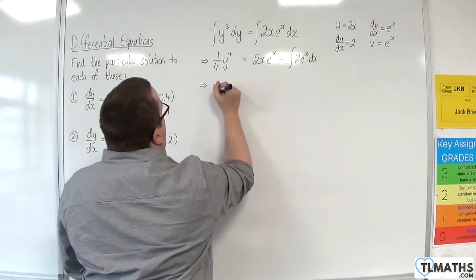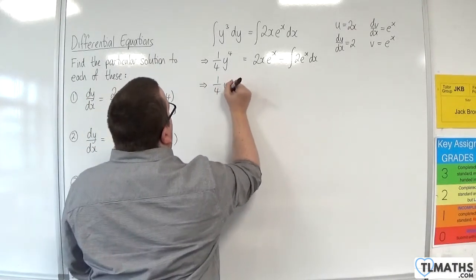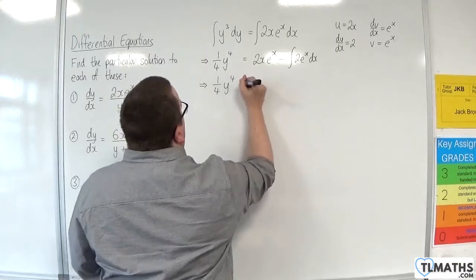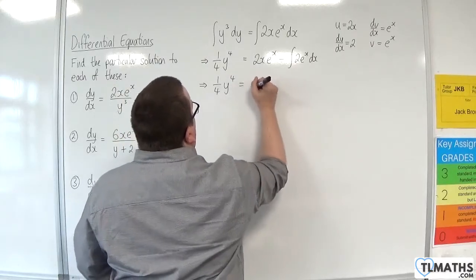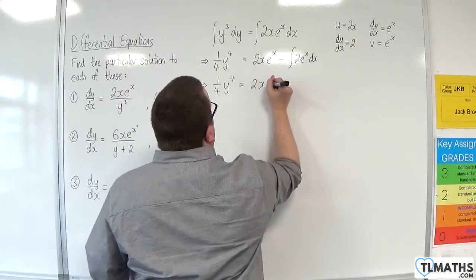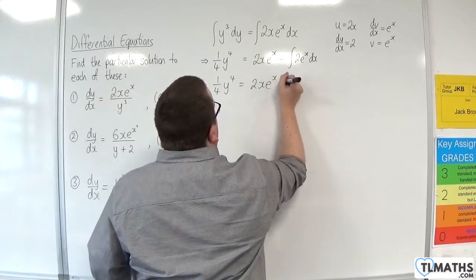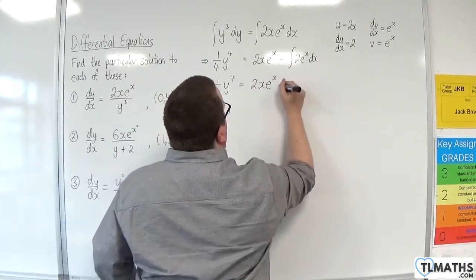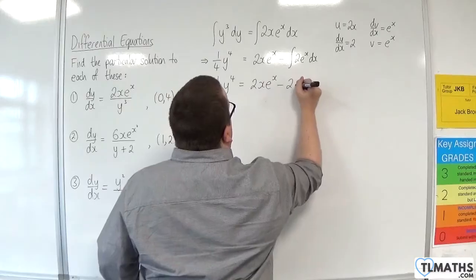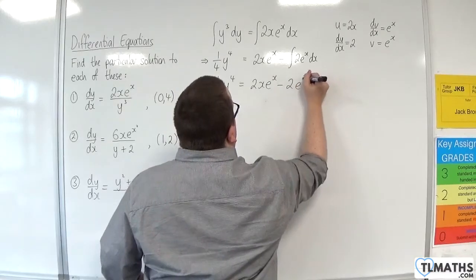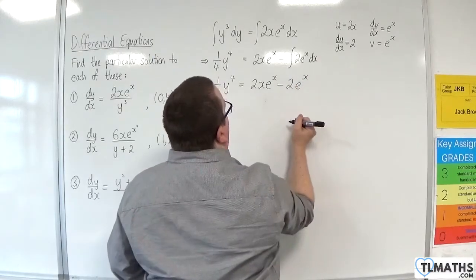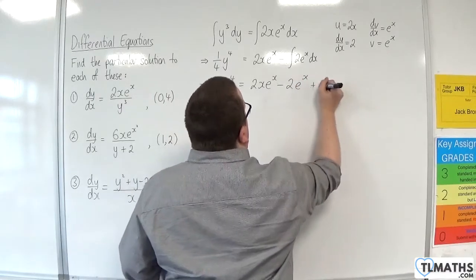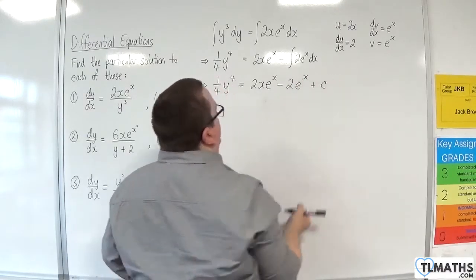So we have 1 quarter y to the 4 is equal to 2x e to the x, and this will integrate to 2e to the x, plus a constant c.